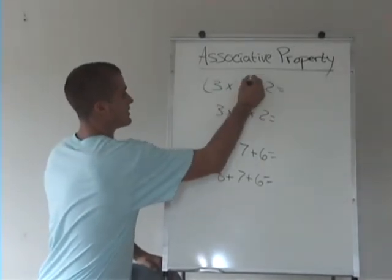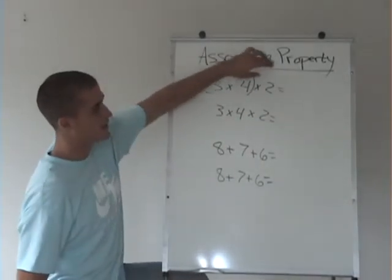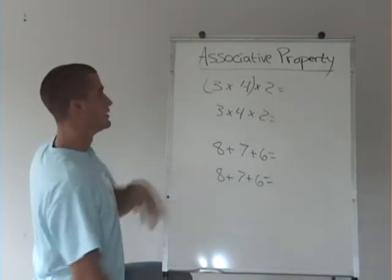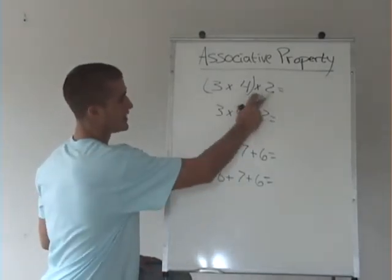So if we start with taking 3 times 4 and associate 3 to 4 before we multiply the 2, we get 12 times this 2 is 24.